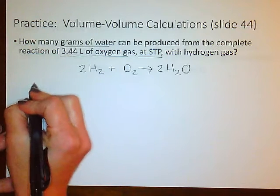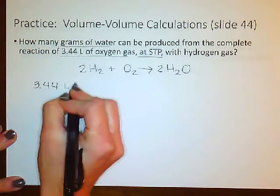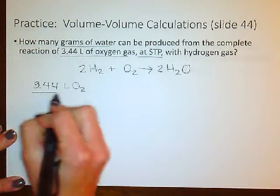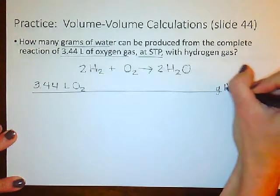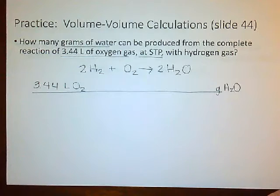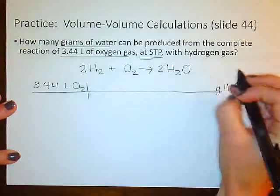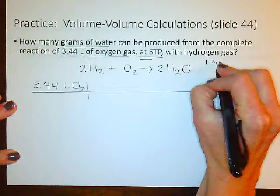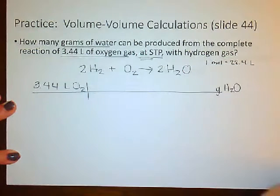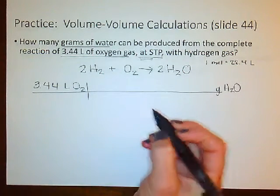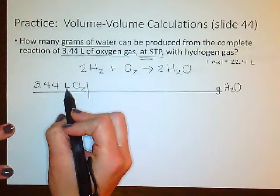Now let's write down what we're starting with: 3.44 liters of O2. It's asking us how many grams of water could be produced. Note that at STP, one mole of any gas takes up 22.4 liters of space, which we've mentioned several times. We're going to start this like any other dimensional analysis problem.